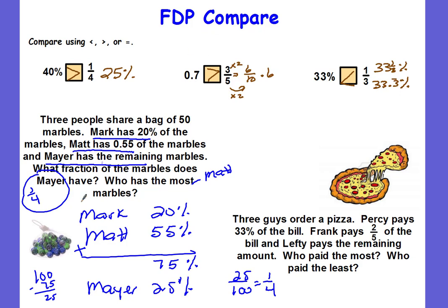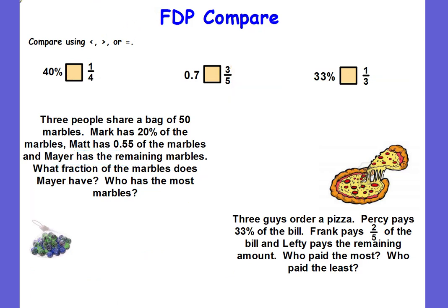Let's work on the pizza problem. If you don't have the previous problem written down, pause and finish writing it. The problem: three guys order a pizza. Percy pays 33 percent of the bill, Frank pays two-fifths of the bill, and Lefty pays the remaining amount. Who paid the most and who paid the least?